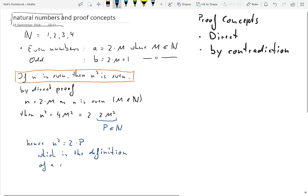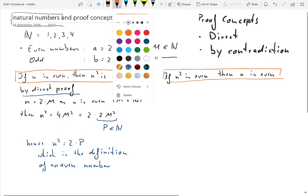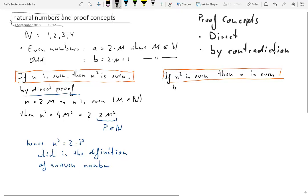So we have therefore proven that if n is even, n squared is also even. We will now turn to the next statement. If n squared is even, then n is even. So we will establish this using a proof by contradiction.